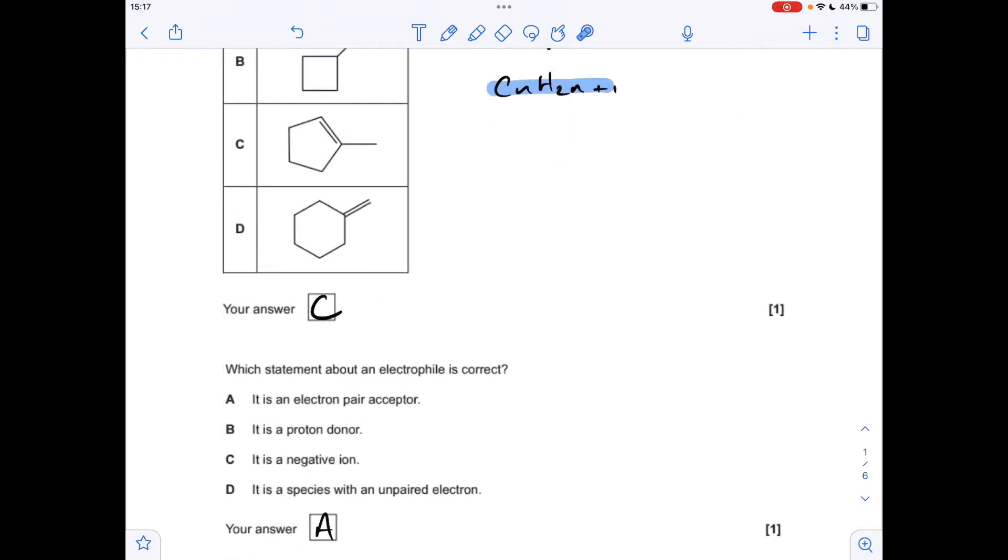The next one's just testing your knowledge of the definition for electrophile, so an electrophile is an electron pair acceptor. The answer was A.